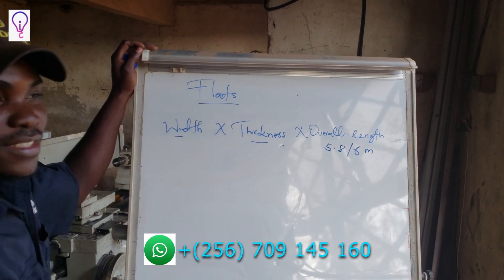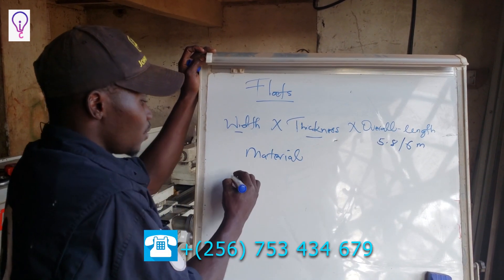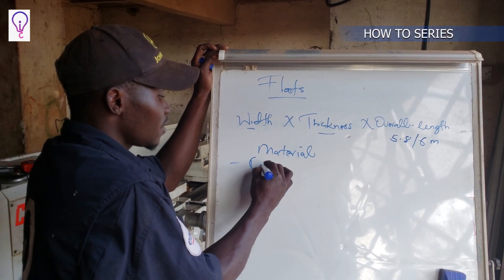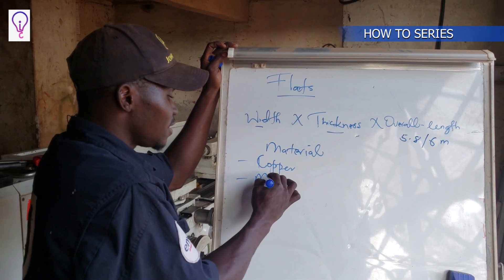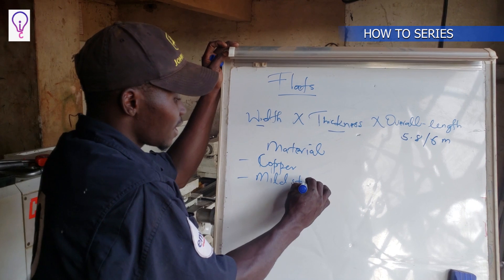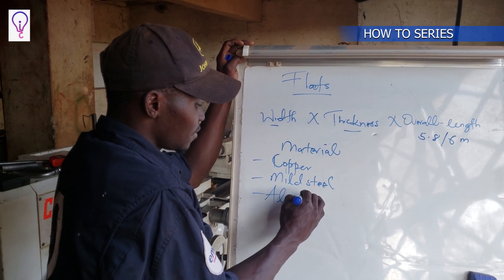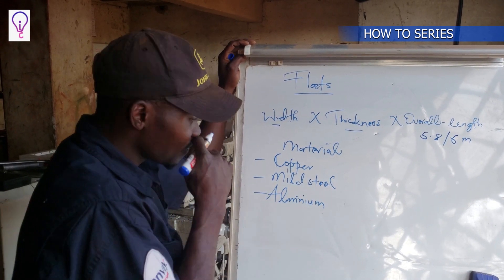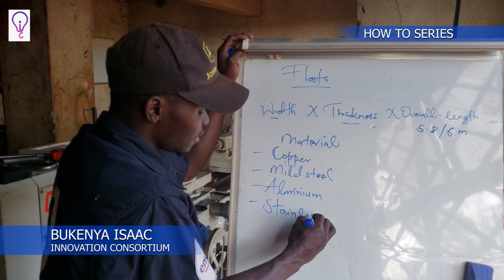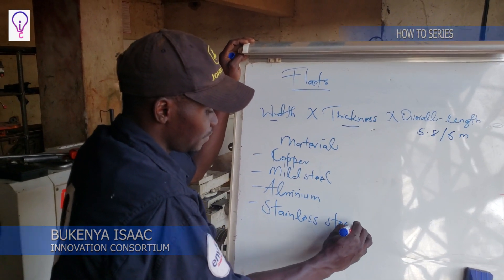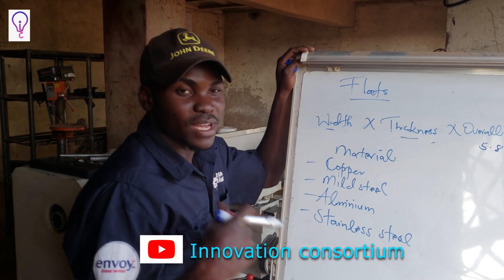The material specification includes: copper flats, mild steel flats, aluminum flats, and stainless steel flats. We differentiate these four physically by their color.